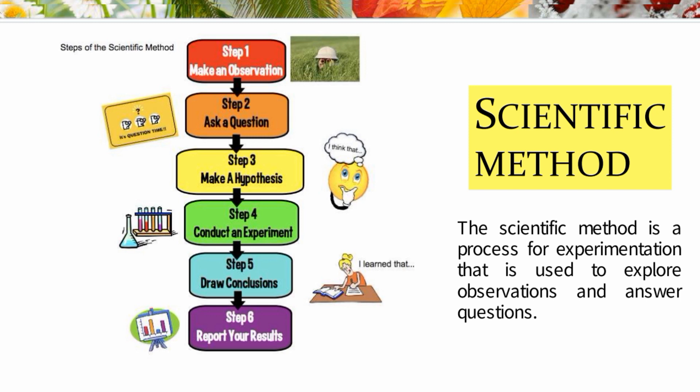As you can see in the diagram, there are different steps of the scientific method. Step one: make an observation. Scientists make detailed observations.